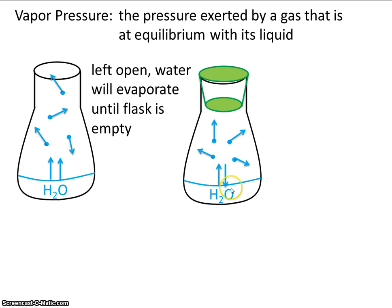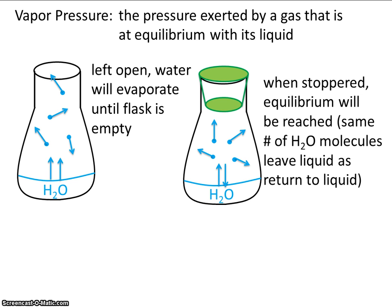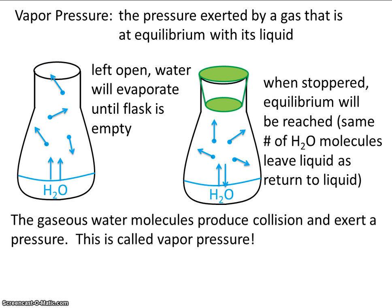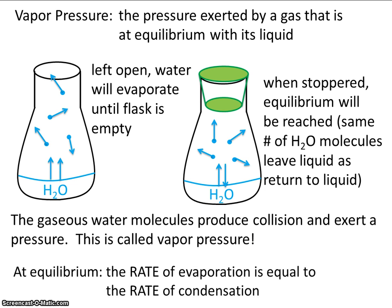When this is at equilibrium, there will be some gas molecules up here bouncing around. The pressure that's exerted by those gas molecules — well, that's what vapor pressure is. The gaseous water molecules produce collisions and exert a pressure; this is called vapor pressure. And just as a reminder, at equilibrium the rate of evaporation is equal to the rate of condensation.